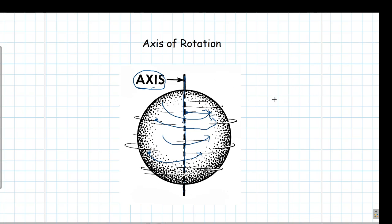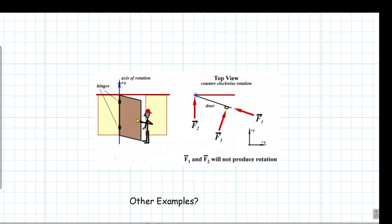Even for planar bodies we can define an axis of rotation. Consider a door: when we open the door it executes a partial rotational motion — it does not go a full circle but rotates by a few degrees. The axis of rotation for the door is the hinge — the attached portion of the door near the hinge forms the axis of rotation. Try to find other examples of rotational motions of rigid bodies and define their axes of rotation.